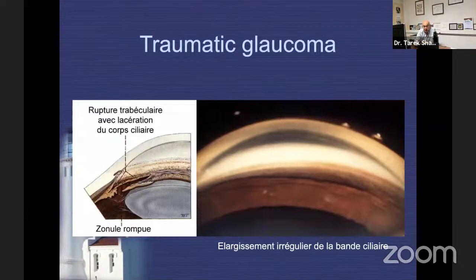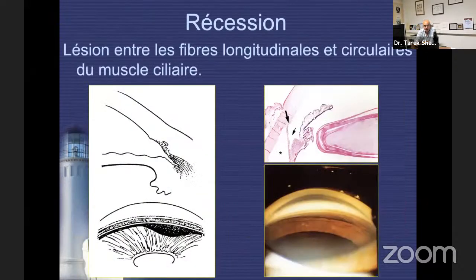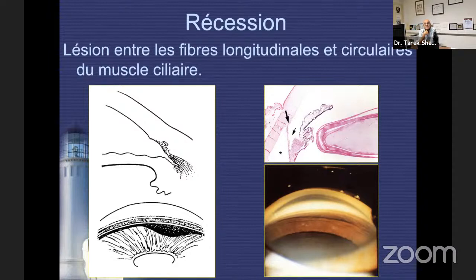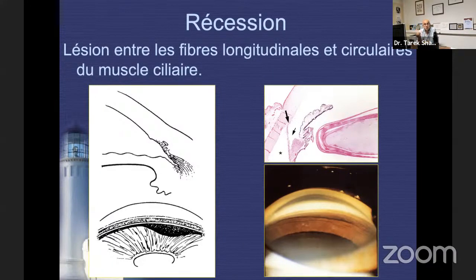Now let's speak about traumatic glaucoma and the role of gonioscopy. You need to identify iris dialysis, angle recession, and remember that hyphema is associated with recession in about 30% of cases. Do not perform gonioscopy immediately while the hyphema is present — wait two, three, or four weeks before attempting it to avoid restarting the bleed.